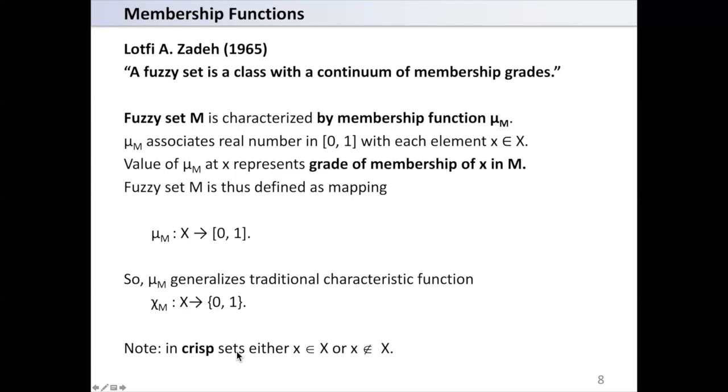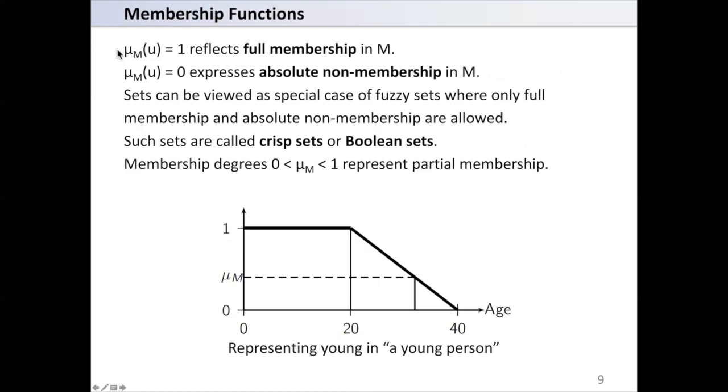Note, in crisp sets, X is either element of the set or not element of the set. If μM at point U is 1, this reflects full membership in M. If membership at point U is 0, this expresses absolute non-membership in M. Crisp sets can be viewed as a special case of fuzzy sets where only full membership and absolute non-membership are allowed. Such sets are called crisp sets or Boolean sets.